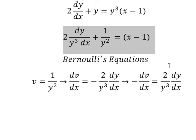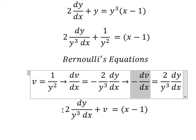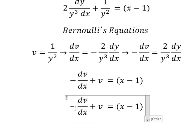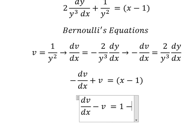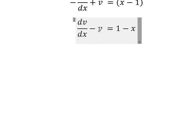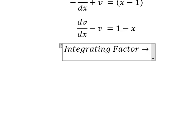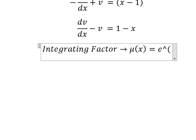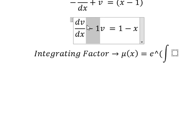So for this one, that is about v. This one we change by this one. Next, we divide both sides by negative 1. And this one we have 1 minus x. So we have v and the derivative of v, so we can use the integrating factor.